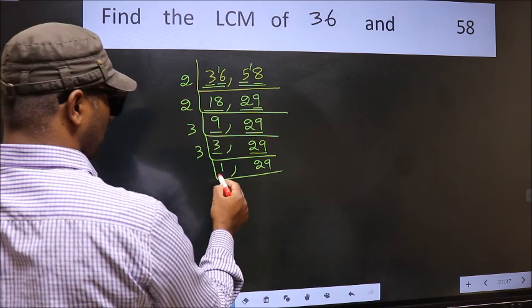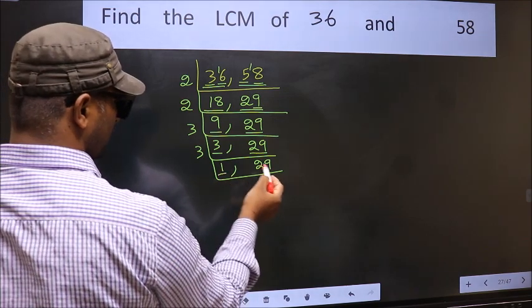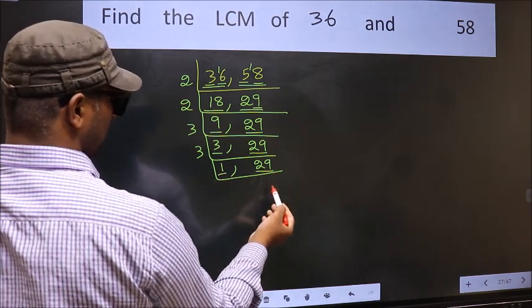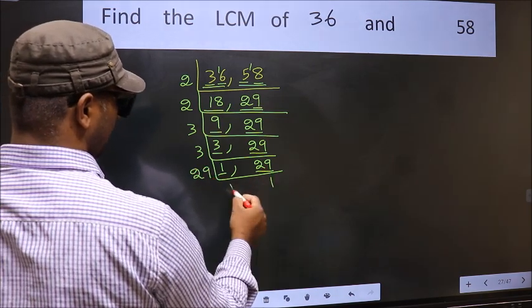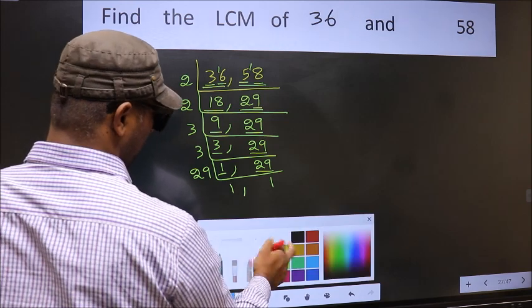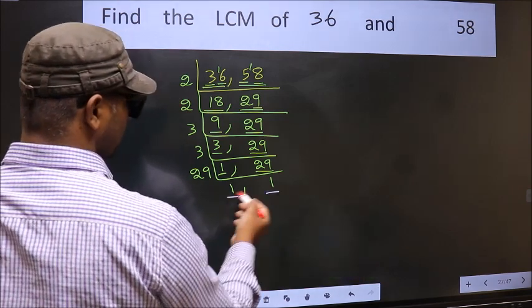Now we got 1 here, so focus on the other number 29. 29 is a prime number, so 29 wants 29. So we got 1 in both the places.